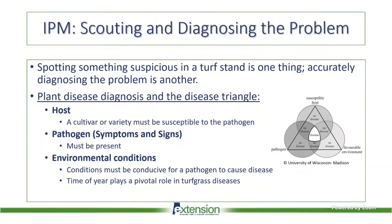Spotting something suspicious in a turf stand is one thing, but accurately diagnosing the problem is another thing entirely. As plant pathologists, we love to talk about the disease triangle, which relates important information to scouting. When thinking about whether this is a disease, think about what the host is — a susceptible variety or cultivar to that pathogen has to be present. The pathogen must also be there, so we're looking for signs and symptoms of a disease when scouting. Symptoms would be lesions or patch issues in turf; a sign would be if you actually saw a fungal spore or mycelial growth. For a pathogen to cause disease, environmental conditions have to be conducive, and the time of year is pivotal for when we will see those disease issues.